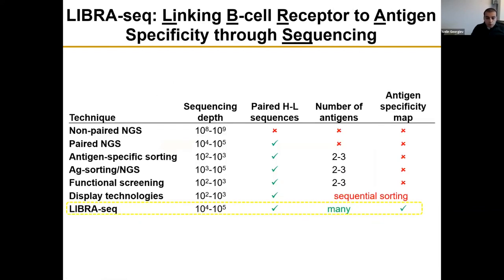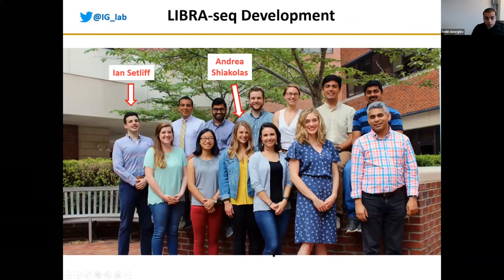We were pretty happy with these results as an initial validation of the LibraSeq technology. We started with nine antigens in this experiment and have gone up to many more since. Unfortunately, because of IP issues and the fact that slides are posted online, I cannot show the most recent data, but hopefully you can get excited about what we can do with this technology. This part of the work was led by two graduate students: Ian Sutliff, now a scientist at Regeneron, and Andrea Shekolas, who is about to graduate and looking for postdoc opportunities.